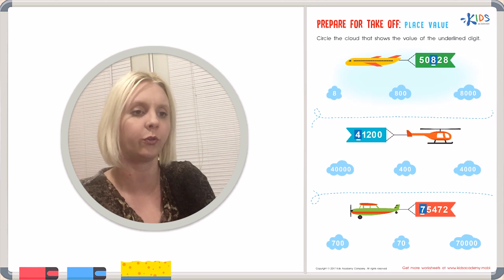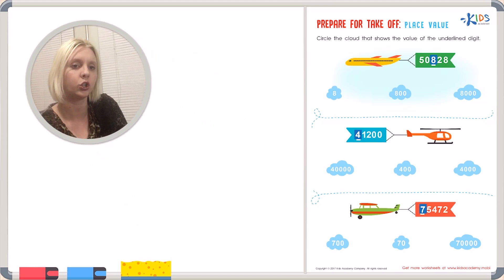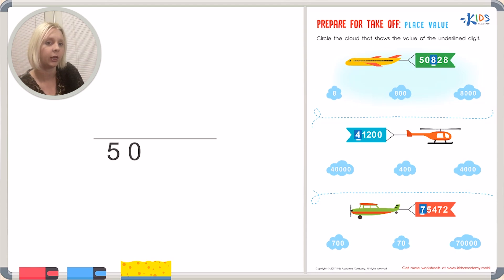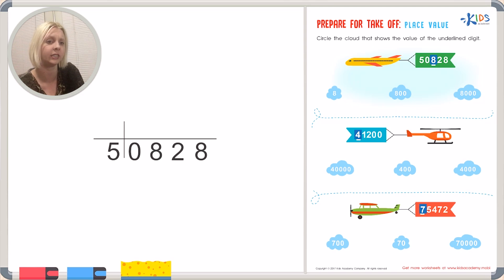So this is what I like to do for place value — I like to make a chart to fit everything in. I'm going to start first and write out my number, and my number is 50,828. I'm going to put this in my chart right here, and I want to draw lines between each number to help keep me organized.